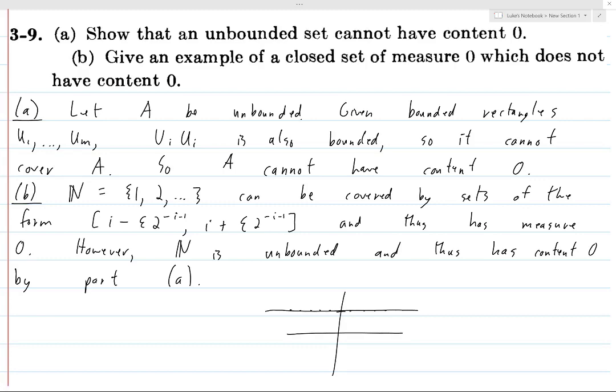However, you don't want it to be the case that its measure can increase. For example, for here, you don't want to have a set which does not have content zero, namely the natural numbers, and then embed it into a larger space, and all of a sudden it has content zero, because that doesn't make sense to embed something in a larger space for the set to get larger.